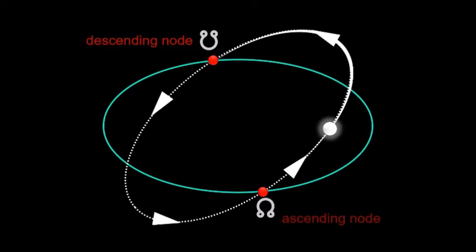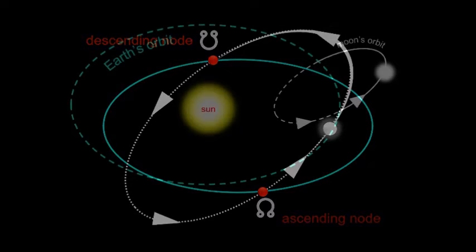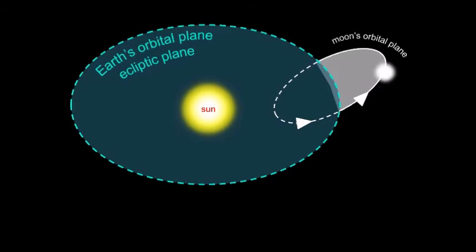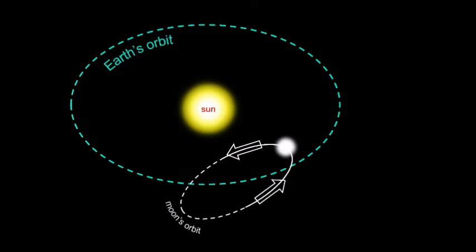Earth's ecliptic is shown in teal color and the Moon's orbit is shown in white. The two lunar nodes — the two points of intersection — are shown as red pellets. This illustration shows a random locus where Moon's orbit crosses Earth's orbit; the part of the Moon's orbit below the plane is shown in a dotted curve. The same applies to another spot of crossing.